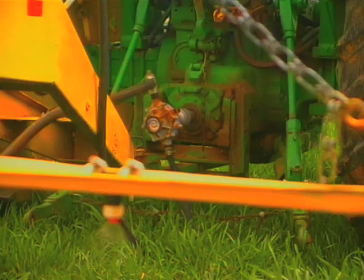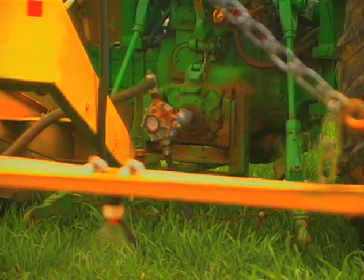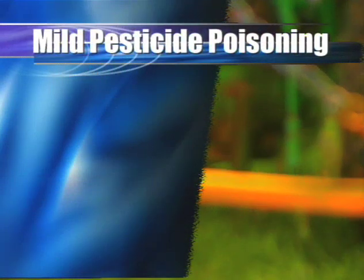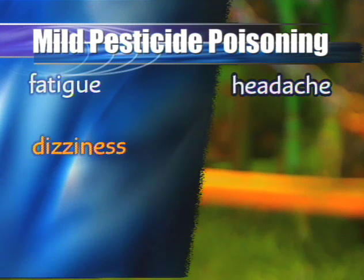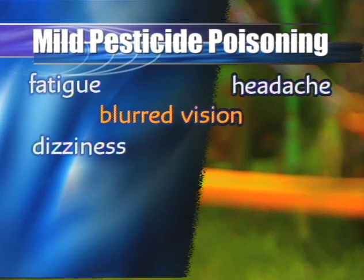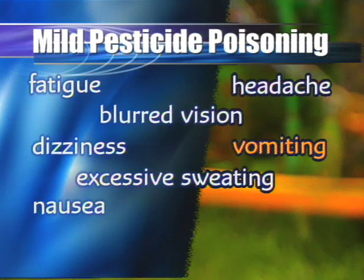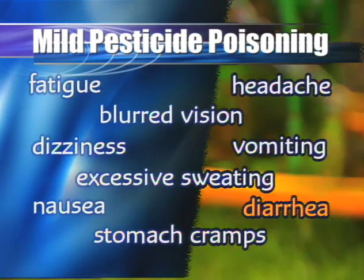Know the signs and symptoms of pesticide poisoning so that first aid can be administered immediately. A person with mild pesticide poisoning will exhibit signs of fatigue, headache, dizziness, blurred vision, excessive sweating, nausea, vomiting, stomach cramps, and diarrhea.